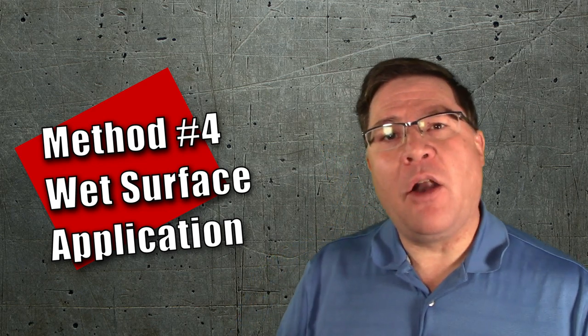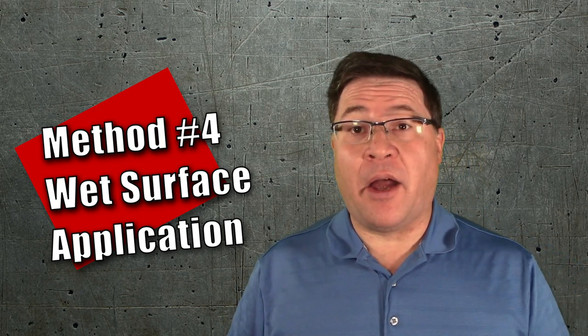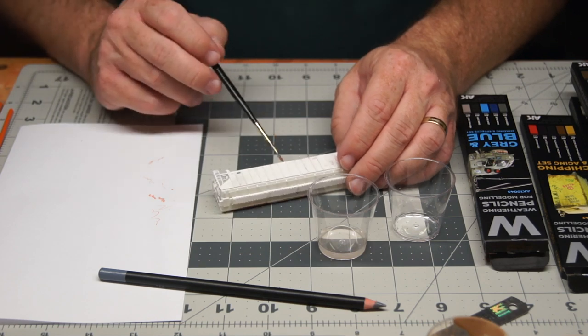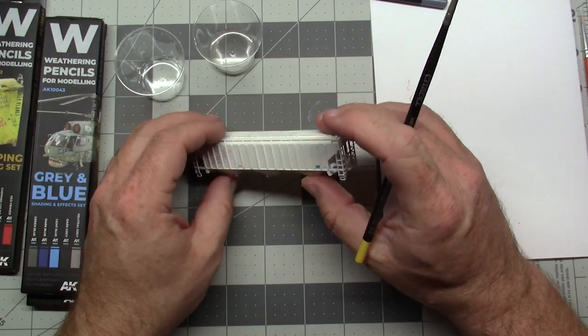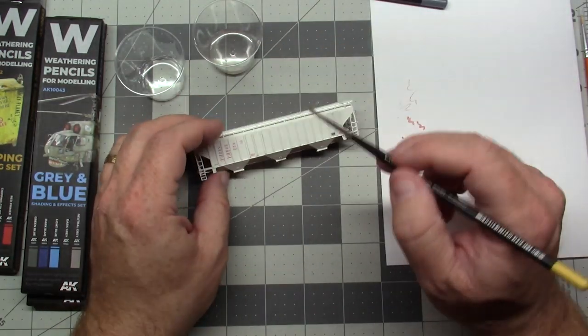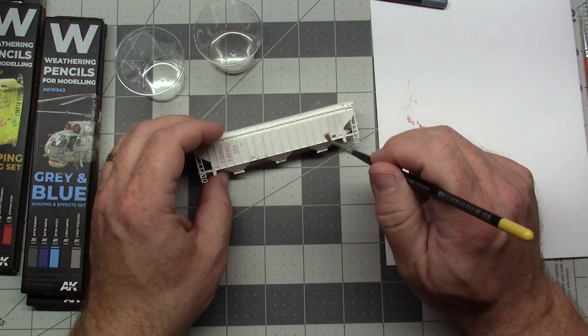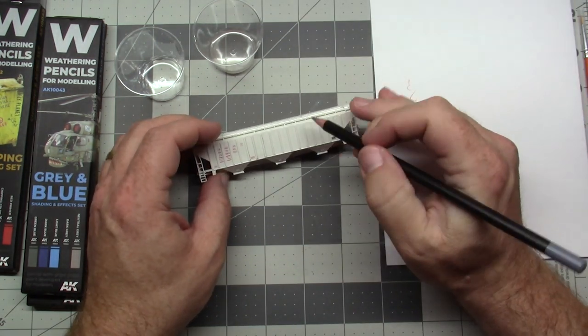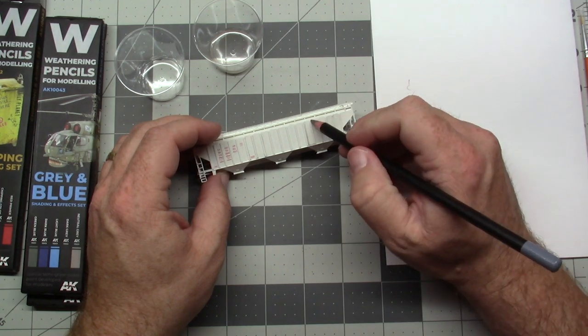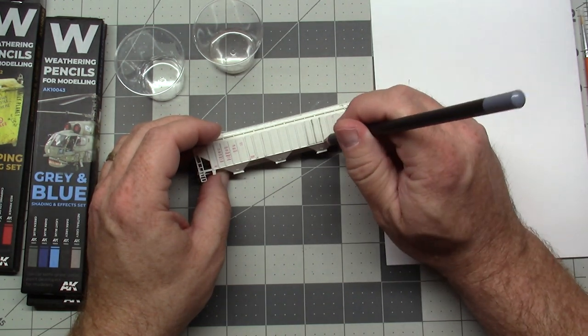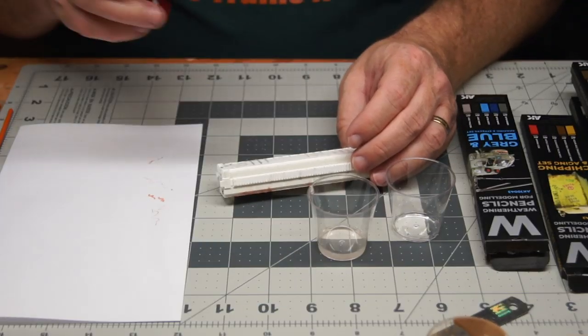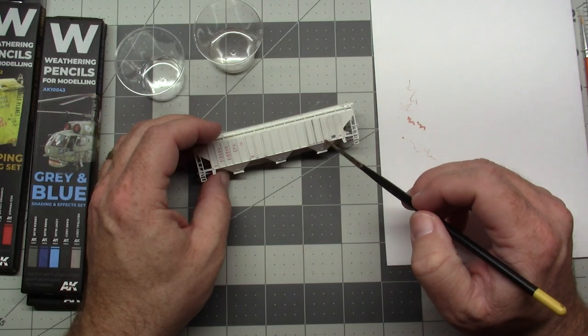Wet surface application and blending. So not only can the pencils be applied dry or with a wet tip, you can also wet the surface of the model and then apply the pencils with both a wet or dry tip. Now I only started exploring this option, but it seems to work. I was curious to see if I could use this to simulate a pin wash. It sort of worked, but I think I need to go back for a few more trials to see if I can get it to work.